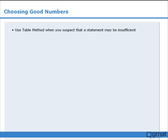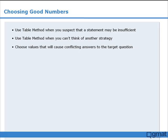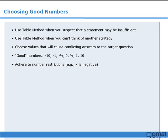To summarize: the table method can be useful if you suspect that a statement may be insufficient. If you aren't sure how to solve a data sufficiency question, the table method may help provide some insight into whether or not a statement is sufficient. When using the table method, your goal is to choose values that cause conflicting answers to the target question. When looking for good numbers to use in your table, consider the ones discussed. And finally, be sure to adhere to any restrictions regarding the numbers you are allowed to use.